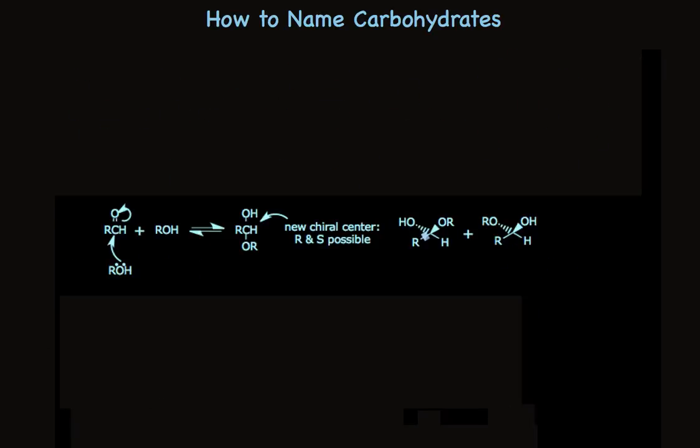Now remember, what's happening chemically is that hydroxyl group is adding to an aldehyde carbonyl. And when it does that, it's making a new chiral center. There are two R and S possibilities, as I've shown here. When they're in the ring, the hydroxyl group will be sticking up or down. And if it's a carbohydrate, they don't call them R and S. They call it alpha or beta.